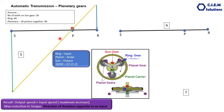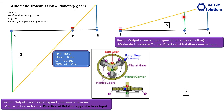Case number six: we again give input to the ring gear, but now we stall the sun gear. The output will be from the planetary case. The output speed will be moderately less than the input speed, and the direction of rotation will be the same as input — a moderate increase in torque. The ratio is 3 to 1. These are the six cases.